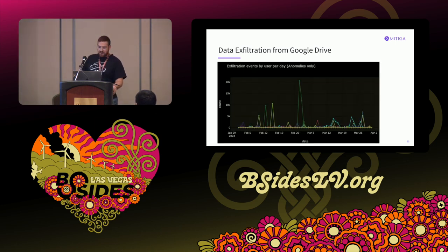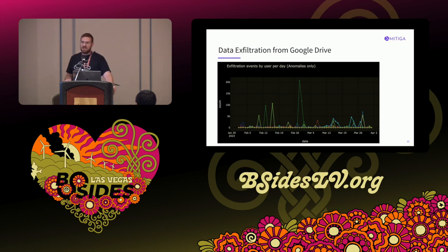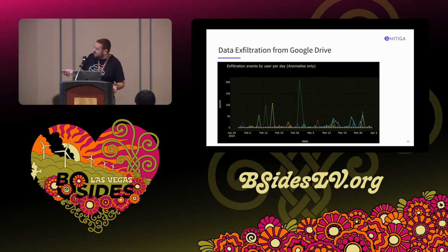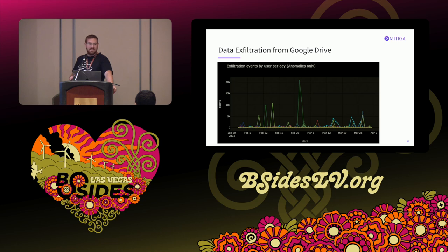For example, this is an anomaly graph based on these events. Each line represents a user, showing how many exfiltration-related events each user performed over time. The green user here performed approximately 20,000 exfiltration-related events on February 27th, which is really interesting to investigate.